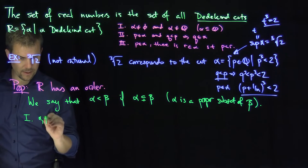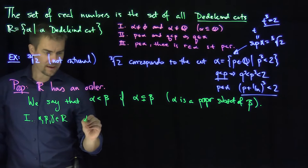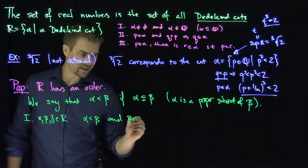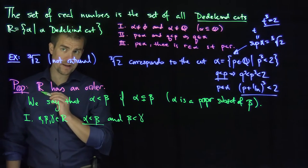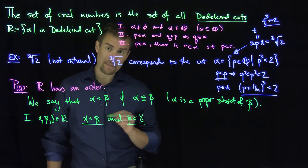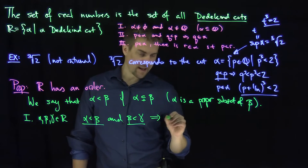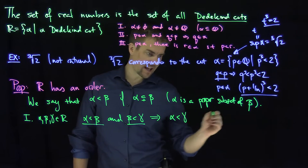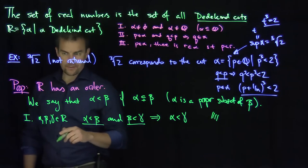If alpha, beta, and gamma are real numbers, and alpha is less than beta, and beta is less than gamma, that says alpha is a strict subset of beta and beta is a strict subset of gamma. Basic set theory then tells us that alpha is a proper subset of gamma, so alpha is less than gamma. So we trivially have transitivity.